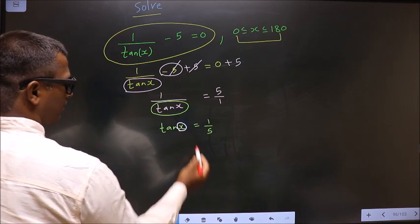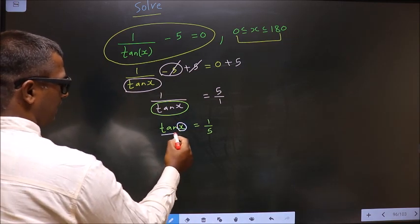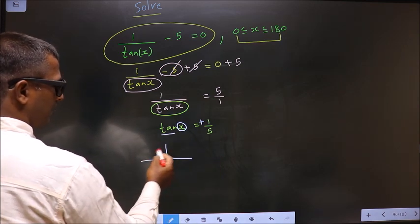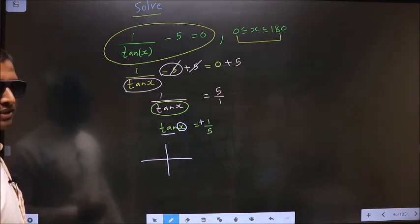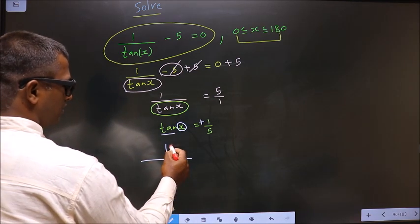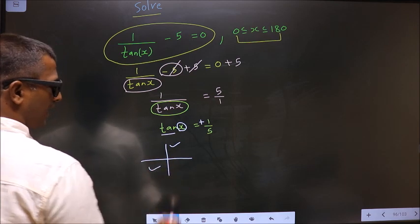Now to get the values for x, here it is tan and here it is positive. So now you should check in what all quadrants is tan positive. It is all silver tea cups. So tan is positive in the first and in the third.